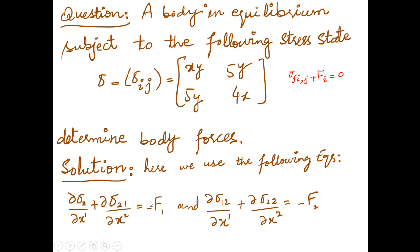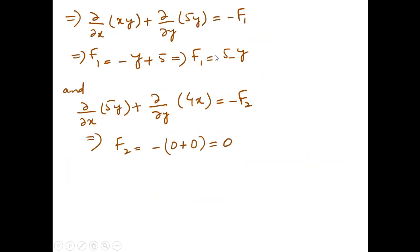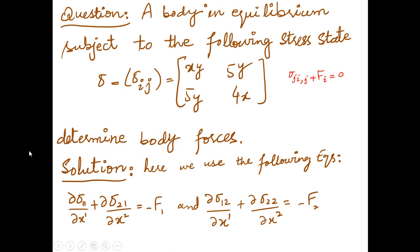Evaluating the derivatives gives: y plus 5 equals minus f1, so the first body force component F1 equals minus(y + 5), or equivalently 5 minus y with appropriate sign. Similarly for the second equation, F2 equals 0. So the body force vector is F = [5 minus y, 0]. If you have a 3D stress state, you use three equations and find F1, F2, F3 accordingly.